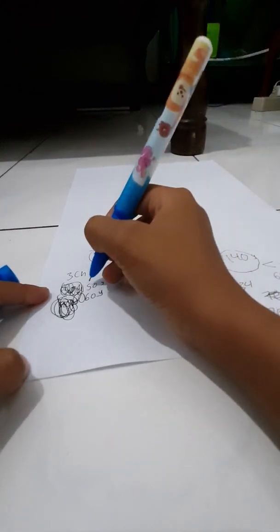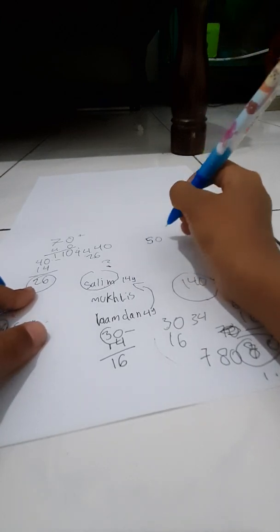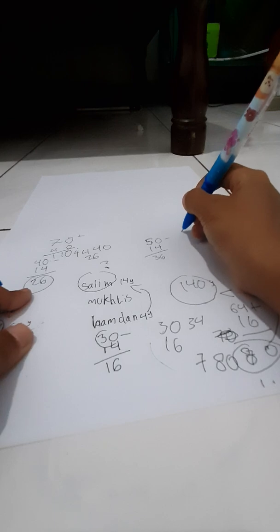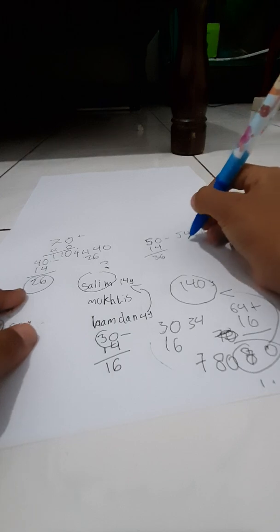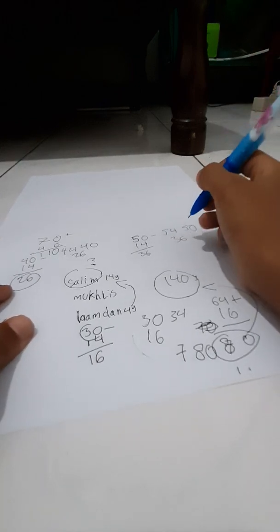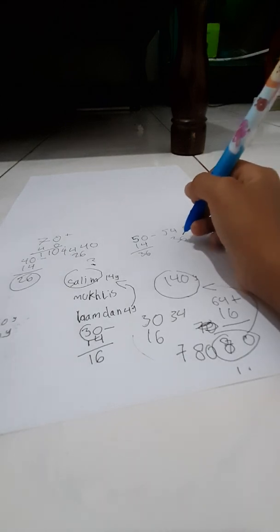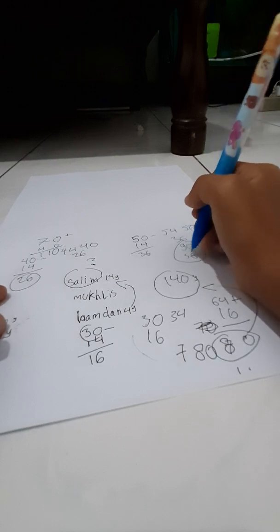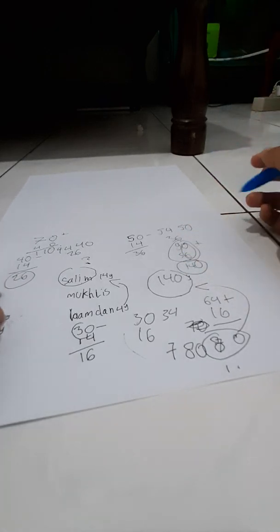Next is 50 years old. So 50 minus 14 would be 36, and Hamdan would be 54. If we add them up — 36 plus 54 is 90, plus 50 is 140. 9 plus 5 is 14, add a zero, that's 140. We have found the answer!